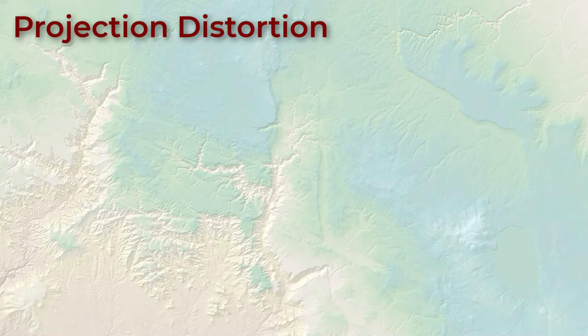We choose a projection based on what type of distortion we want to maximize accuracy in for our analysis, and whether we want to make an aesthetically pleasing or convincing map. There are four types of projection distortion we usually care about, and we generally choose a projection that minimizes distortion in one type while sacrificing accuracy in the others. These types are shape, area, length, and direction.